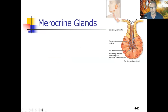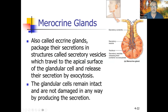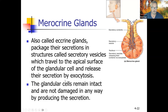Merocrine glands: little vesicles make their way to the cell surface and dump their products, then travel upward. None of the cell is destroyed — it just produces something and dumps it. These are also called eccrine glands, so know both terms for the test. The secretion is released by exocytosis — the docking of vesicles with the surface and dumping contents into the lumen. The glandular cells remain intact and undamaged.